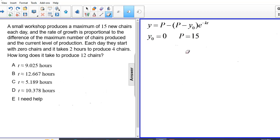15 is the maximum number of chairs they produce each day. We are given a subsequent condition that when y is equal to 4, t is equal to 2. And we are looking for what time will it take to produce 12 chairs. So t is unknown for the final step here.